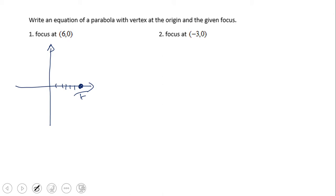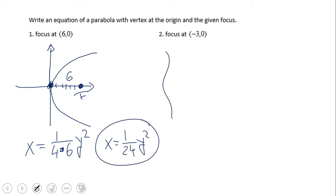The vertex is at the origin, so we have a sleepy parabola, as I call it, open to the right. So there will be x equals, because it's a sleepy parabola, one over 4c, 4 times—how much is c? C is the distance from the focus to the vertex—y squared. Yes, the final form would be x equals one over 24 y squared. A very simple problem in my opinion.